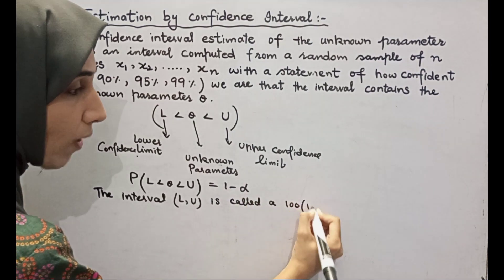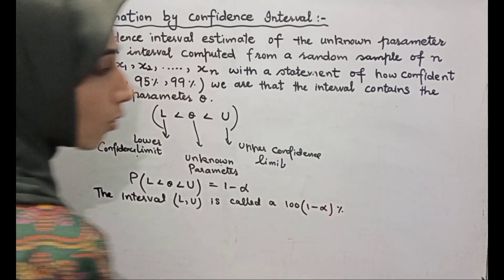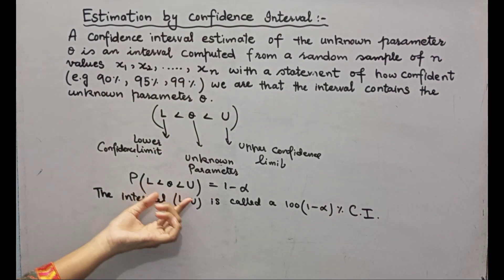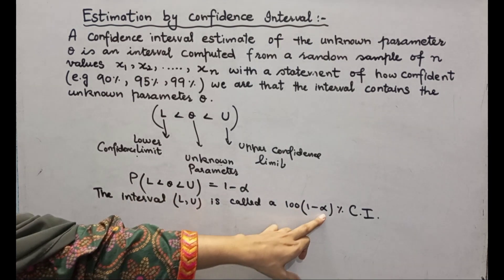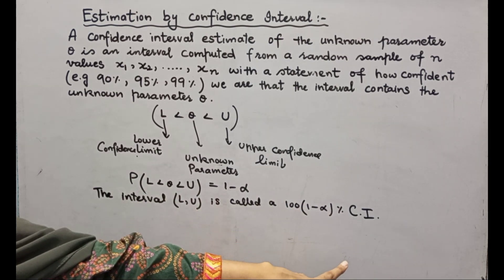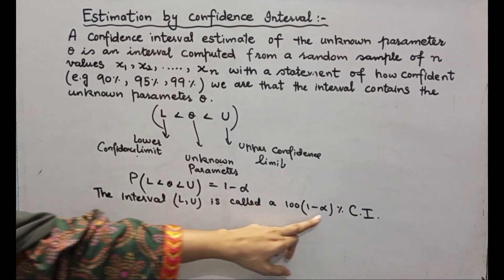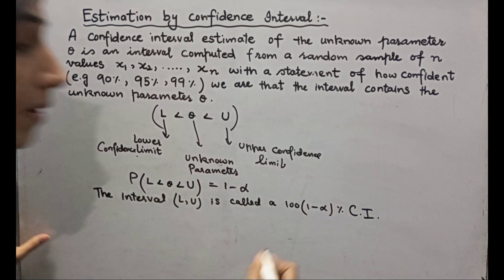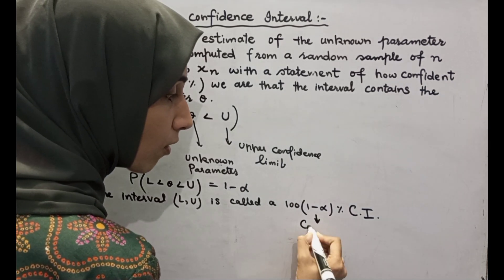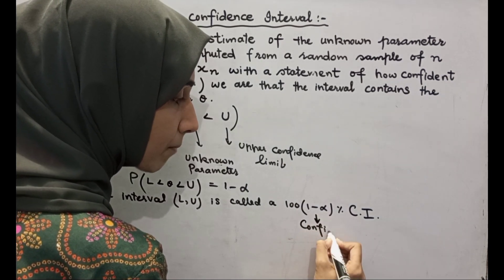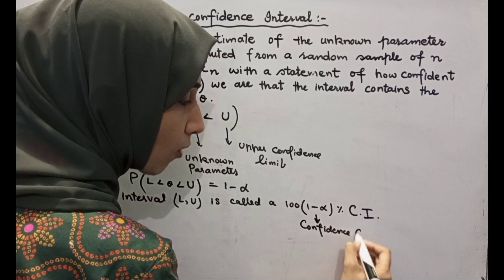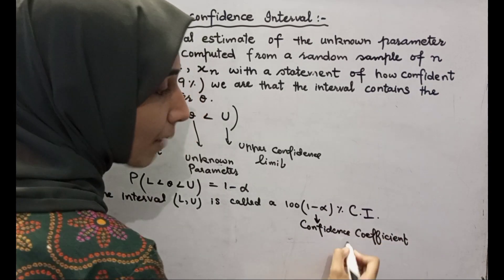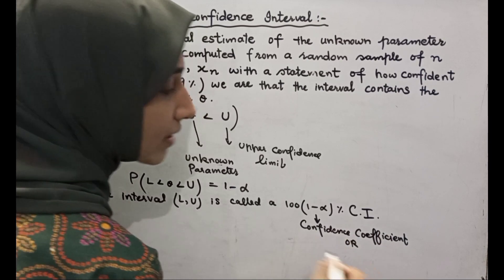We call this the 100(1-alpha) percent confidence interval. What is 1-alpha? We call it the confidence coefficient or confidence level.